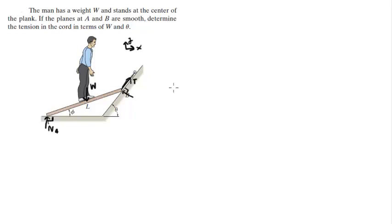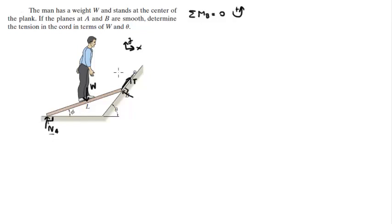The first thing I'm going to do is the sum of the moments at B is equal to 0, and I'm going to assume counterclockwise is positive. As you can see, at B you have two moments: the moment created by the weight and the moment created by the normal at A.